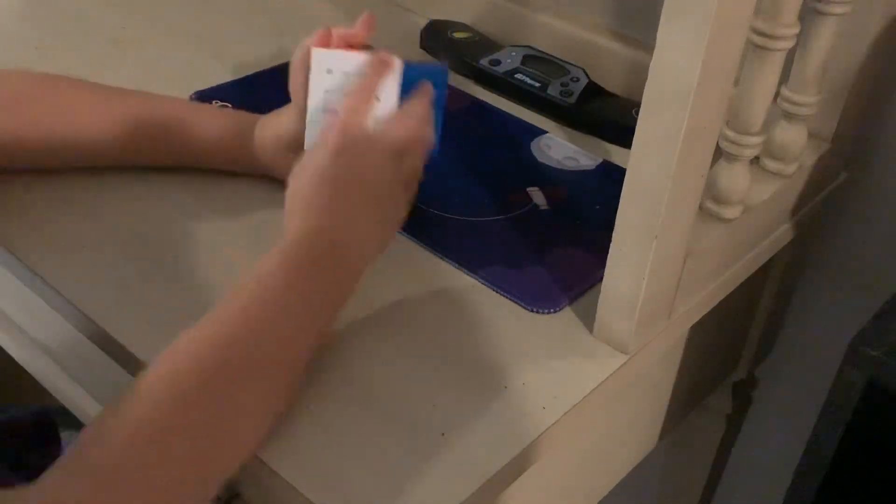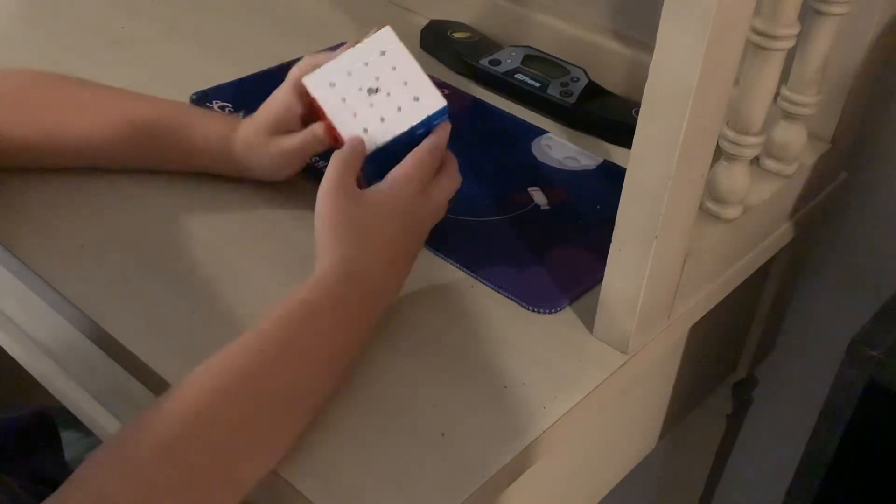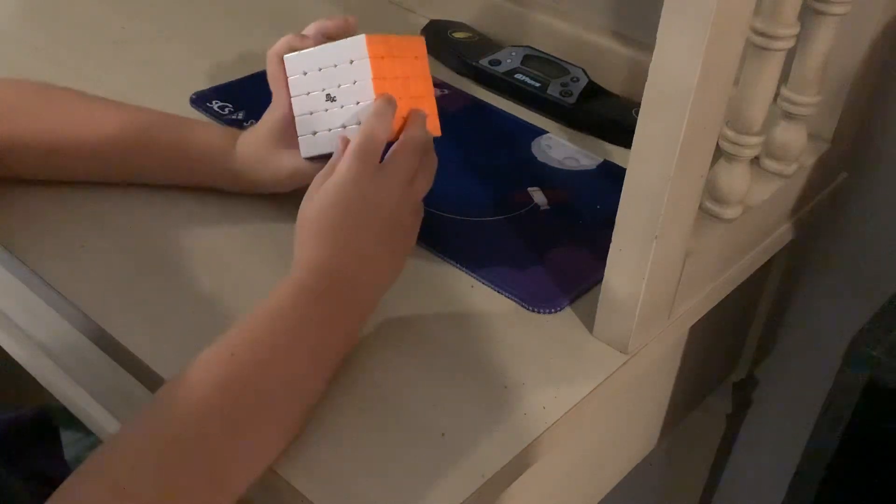Hi guys, it's Rubik's with Leo, and today I'm going to show you how to do a checkerboard pattern on your 5x5 cube.